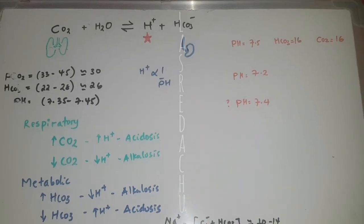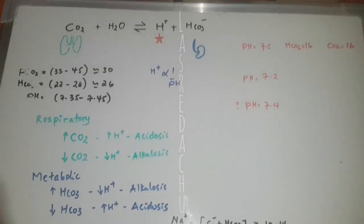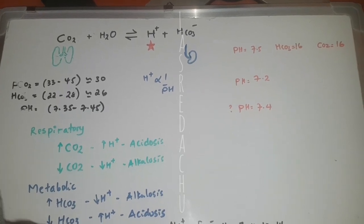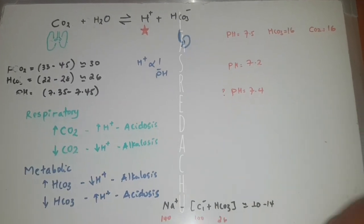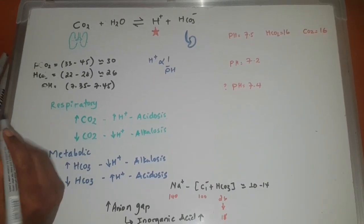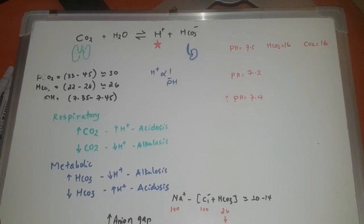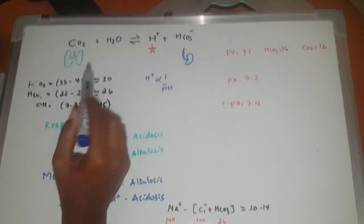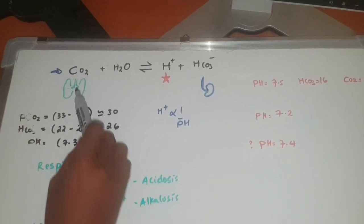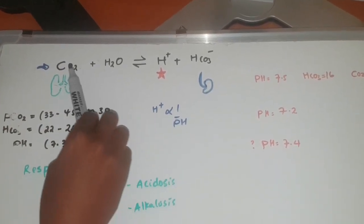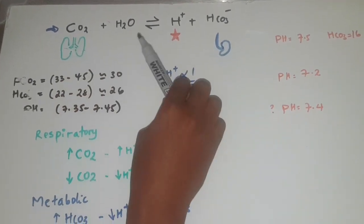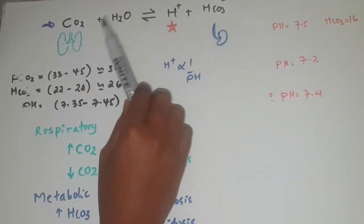This is the acid-base balance. It looks complicated, but this is the formula for the acid-base equilibrium. In the formula, CO2 plus H2O gives hydrogen plus bicarbonate.